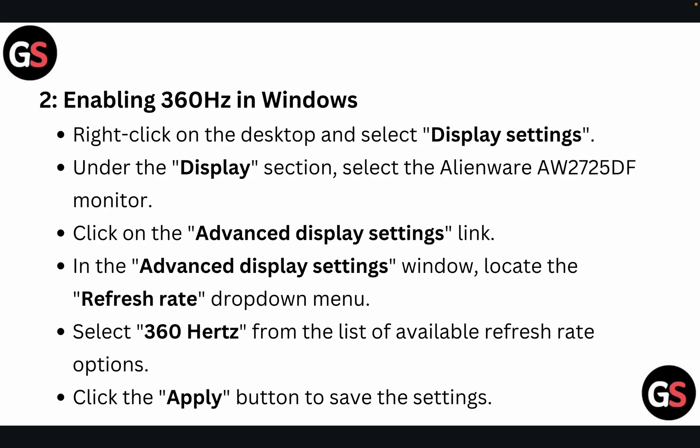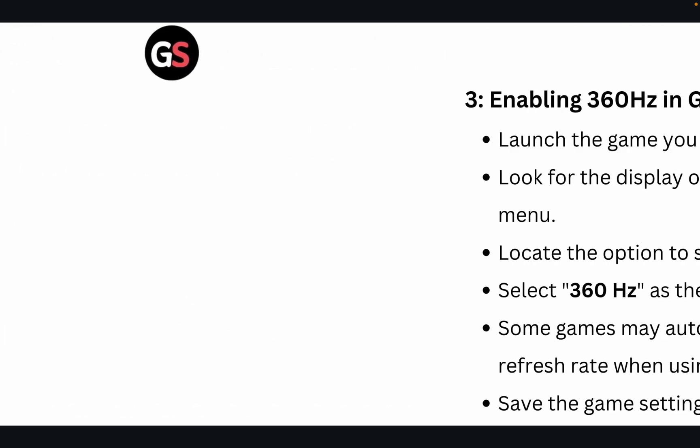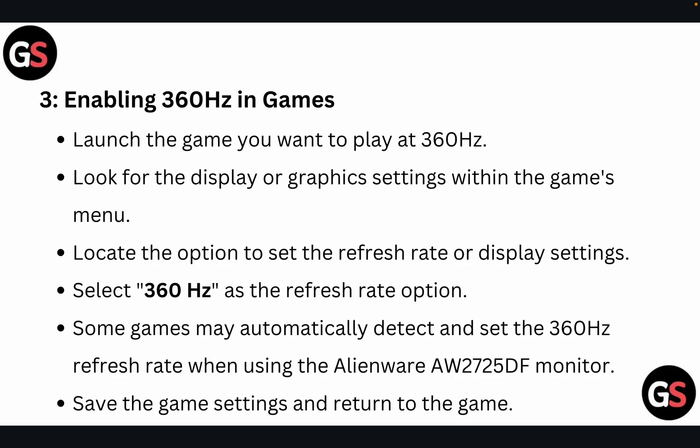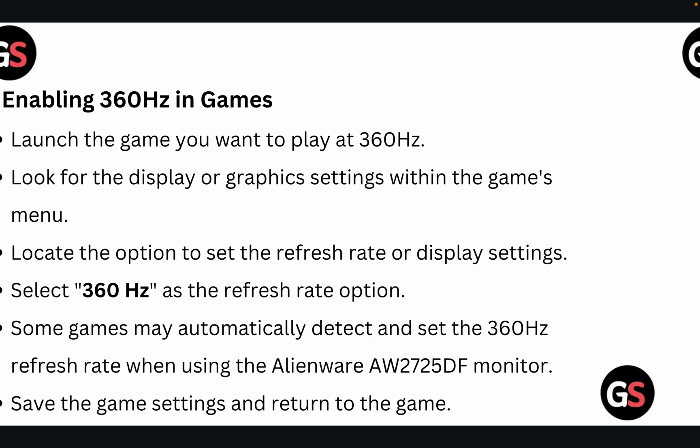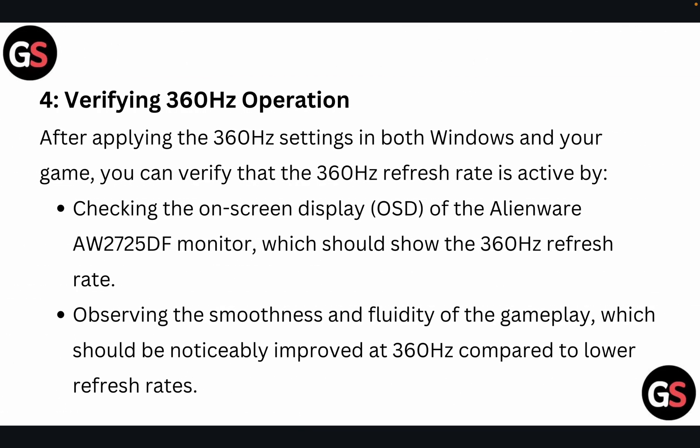Step 3: Enabling 360 hertz in-game. Launch the game you want to play at 360 hertz. Look for the display or graphics settings within the game menu and locate the option to set the refresh rate. Select 360 hertz as the refresh rate option. Some games may automatically detect and set the 360 hertz refresh rate when using the Alienware monitor, so you can simply save the game settings and return to the game.